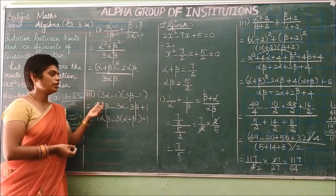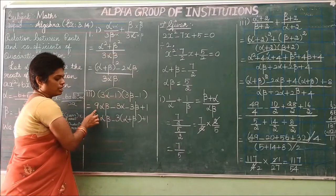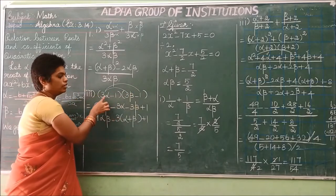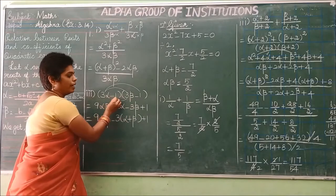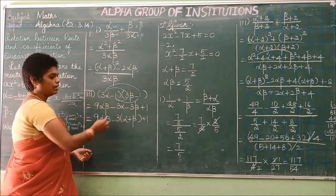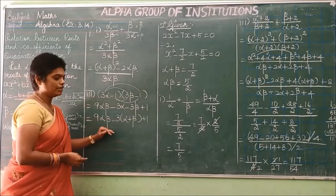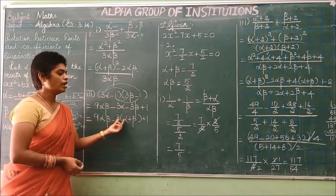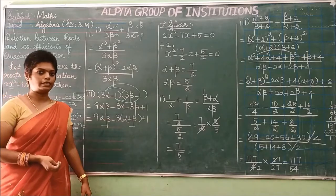The third expression is (3α−1)(3β−1). Multiplying each term: 3×3 = 9, alpha × beta = αβ. Then 3α × (−1) = −3α, 3β × (−1) = −3β, and (−1)(−1) = +1. So we get 9αβ − 3α − 3β + 1. Take −3 as common from the middle terms: −3(α+β). The expression is now in the form 9αβ − 3(α+β) + 1, containing both αβ and α+β.